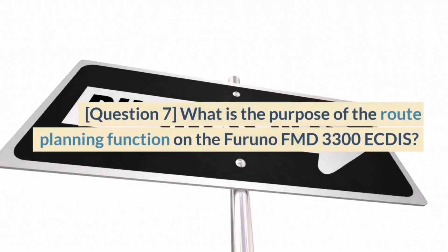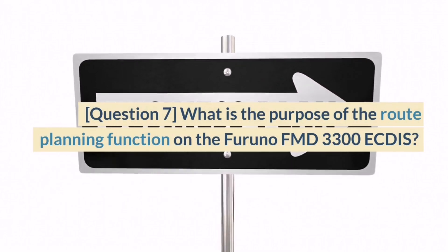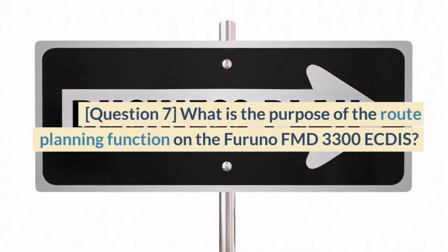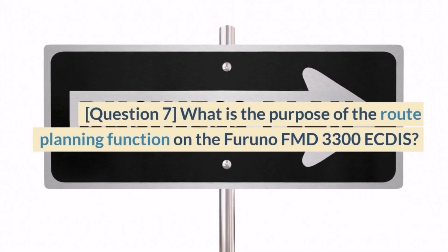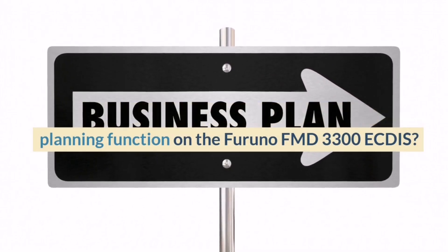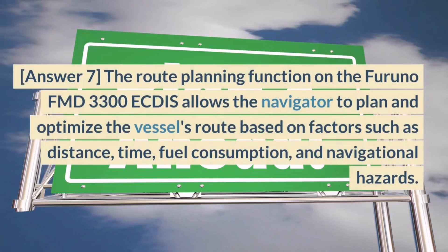Question 7. What is the purpose of the route planning function on the Furuno FMD 3300 ECDIS? Answer 7. The route planning function allows the navigator to plan and optimize the vessel's route based on factors such as distance, time, fuel consumption, and navigational hazards.